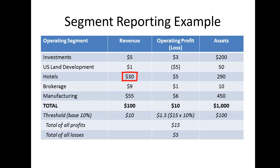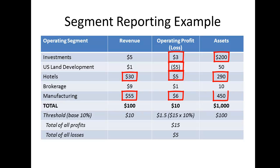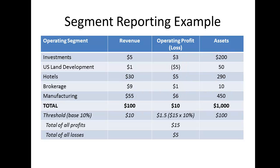Applying the revenue test, Hotels and Manufacturing are reportable. Applying the profit test, Investments and U.S. Land Developments — because of the absolute amount of the losses greater than the threshold — Hotels and Manufacturing are reportable segments. And applying the asset test, Investments, Hotels, and Manufacturing are reportable segments. So it looks like all the operating segments except for the brokerage business are reportable segments. As brokerage only represents $9 million of the $100 million of revenue, our segment disclosures account for 91% of revenues, and thus we need to disclose no further.